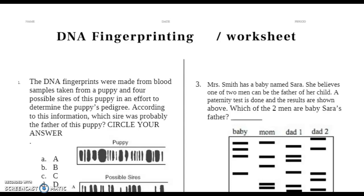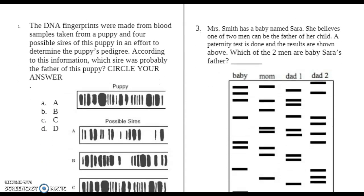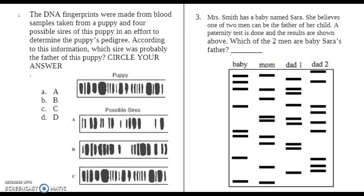Now we'll go over the DNA Fingerprinting Worksheet together. The DNA fingerprints are made from blood samples taken from a puppy and four possible sires of this puppy in an effort to determine the puppy's pedigree.